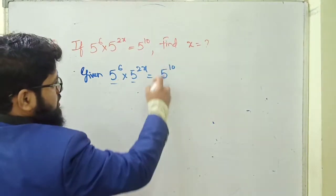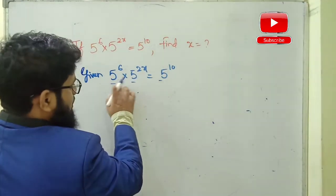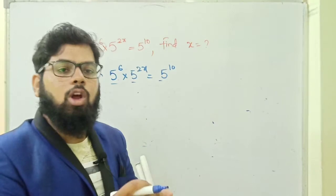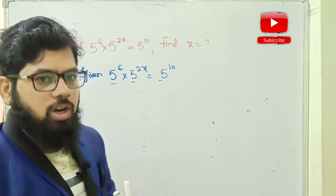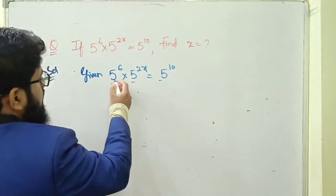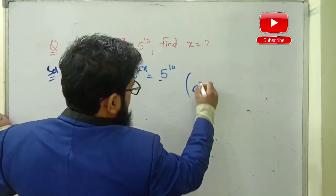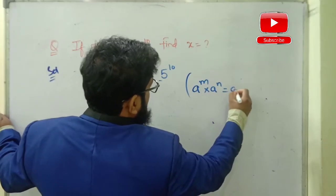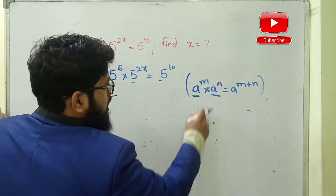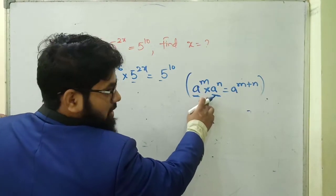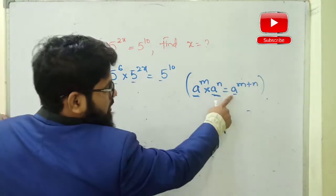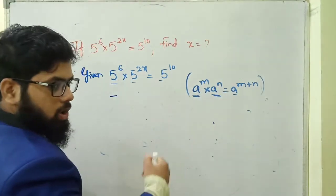This side is known as LHS and this side is known as RHS. Here you can observe bases are same. Whenever the bases are same, we can add the powers, or subtract if minus is there — which we discussed in the previous video. The formula is: a^m into a^n is equal to a^(m+n). Here bases are same and it is in multiplication.